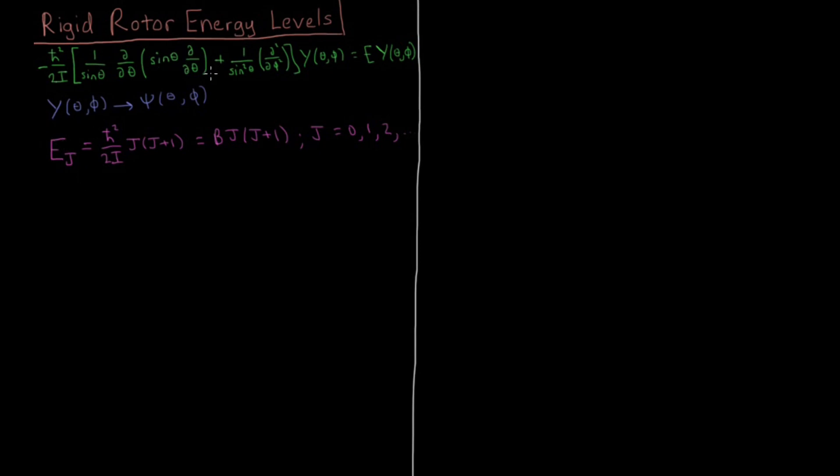So when we solve this, which we're not going to go through because it involves quite a lot of non-trivial differential equations, we're going to see that the energy depends on some quantum number, some integer j. So we have what we've seen in the other two model systems, not any energy level is allowed, only certain quantized values are allowed, which obey this equation.